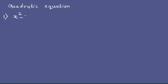x² minus 81 equals 0. In this example, x² is the perfect square of x and 81 is the perfect square of 9. The square root of x² is x and the square root of 81 is 9. Since there is minus 81, we give plus sign to one 9 and minus sign to the other 9, giving us (x + 9)(x - 9) = 0.